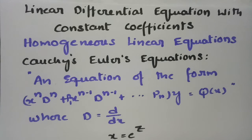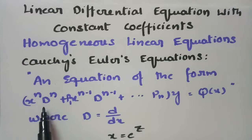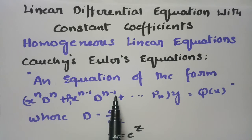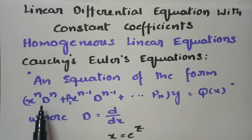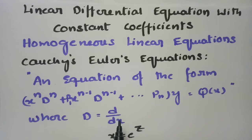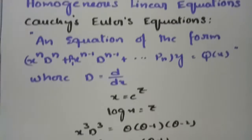Today's video is on Cauchy's Euler equation, and this topic is from linear differential equations with constant coefficients. An equation of the form x^n D^n plus p1 x^(n-1) D^(n-1) plus ... plus pn of y equals Q(x), where D is the derivative with respect to x, d/dx. In order to transform this Cauchy's Euler equation into a linear equation with constant coefficients, we need a substitution.